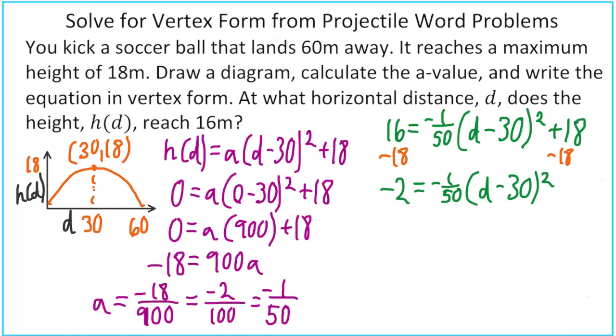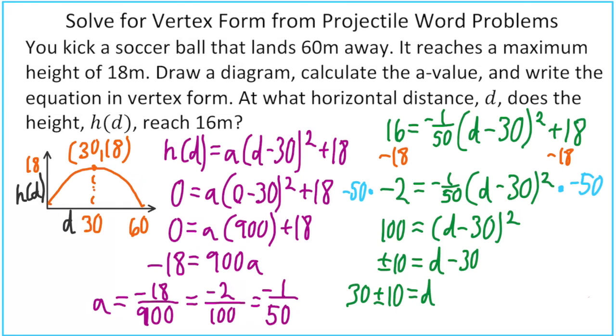And now we want to get rid of our negative 1/50. Remember, multiplying by 1 over 50 is the same as dividing by 50. So the opposite would be multiply. So we'll multiply the right side by negative 50, and we have to do the same to the left side. That leaves us with this. And now we're going to take the square root of both sides, and we're left with plus or minus 10 equals d minus 30. Move that negative 30 to the other side, and there's your answer.